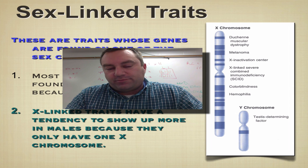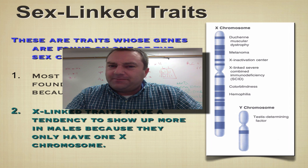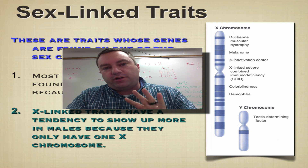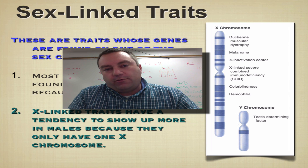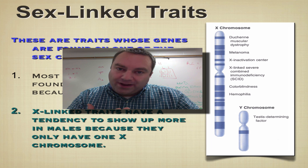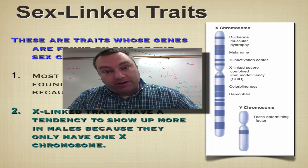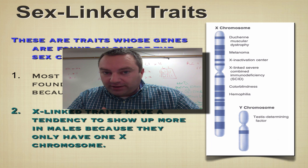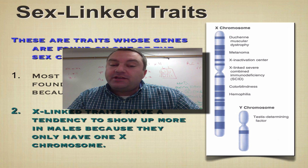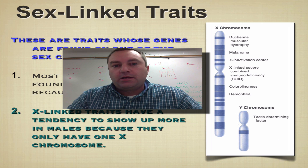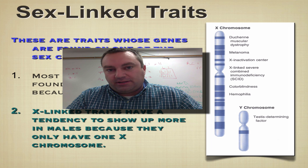Welcome to episode number eight from chapter 14. This episode is probably going to be the longest in our series because we're going to cover four slides. We're going to explain what a sex-linked trait is, and we're going to go over red-green color blindness, hemophilia — which is bleeder's disease — and Duchenne's muscular dystrophy. We'll also show you how to do Punnett square problems involving sex-linked traits.